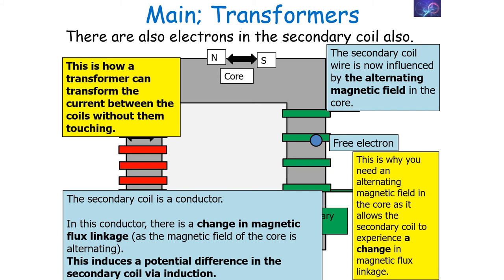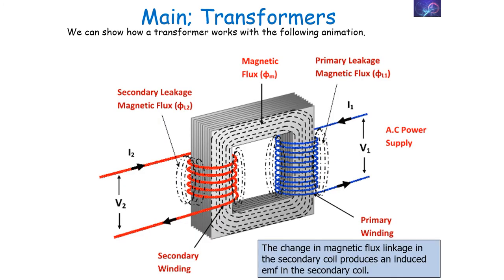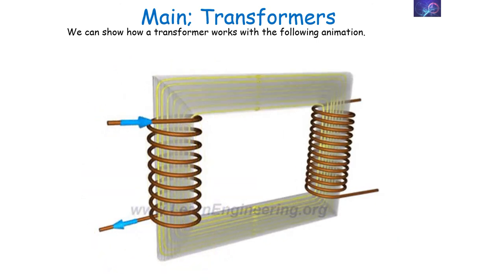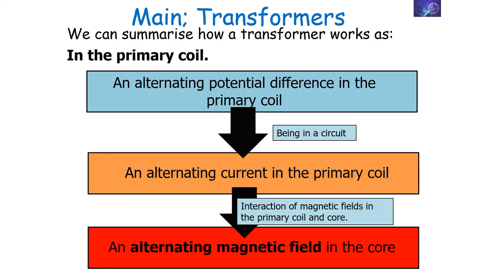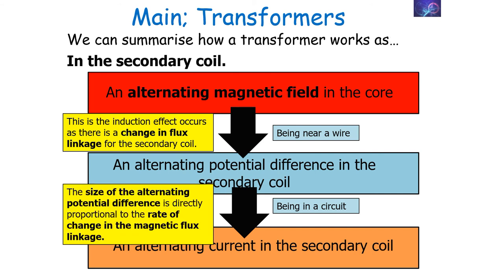In summary, how a transformer works: an alternating potential difference in the primary coil leads to an alternating current in the primary coil, which leads to an alternating magnetic field in the core. This alternating magnetic field causes a change in flux linkage for the secondary coil, leading to an alternating potential difference in the secondary coil, which then leads to an alternating current in the secondary coil since it is part of a circuit. The size of the potential difference is directly proportional to the rate of change of magnetic flux linkage.